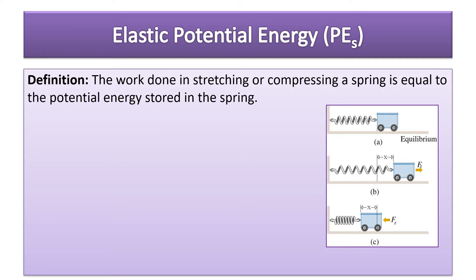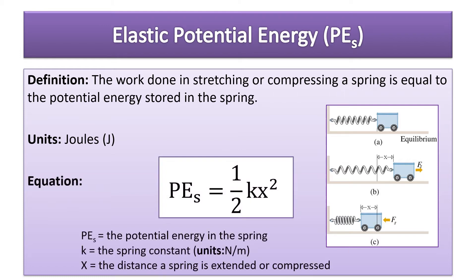The formal definition: the work done in stretching or compressing a spring is equal to the potential energy stored in the spring. The units for elastic potential energy are joules — any kind of energy is measured in joules. The equation we just derived is one-half k x squared.